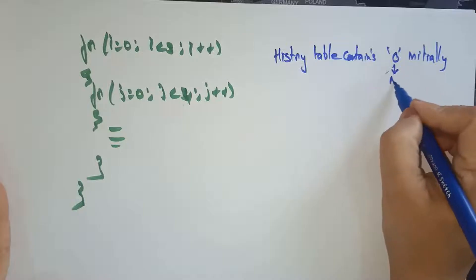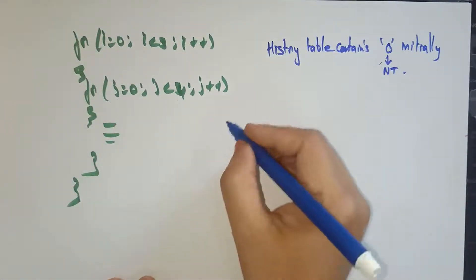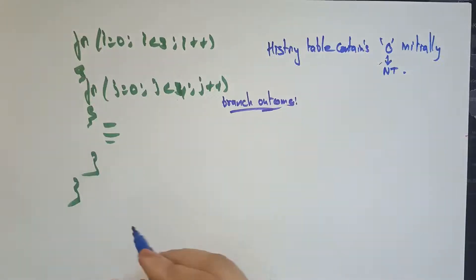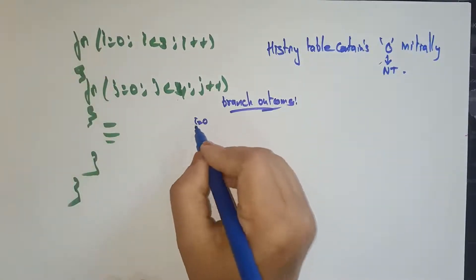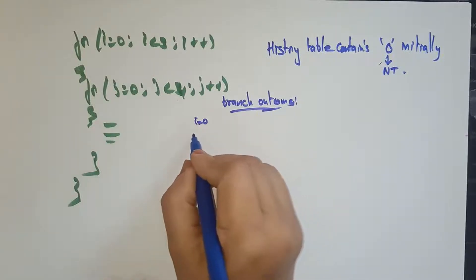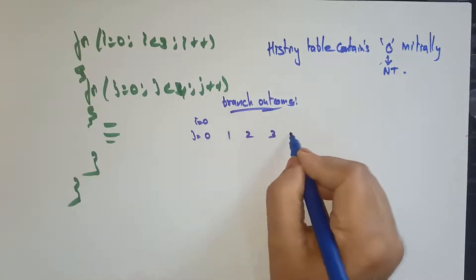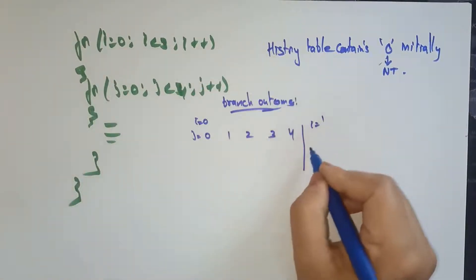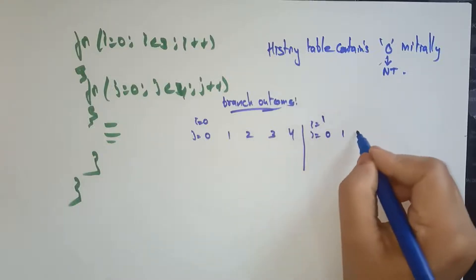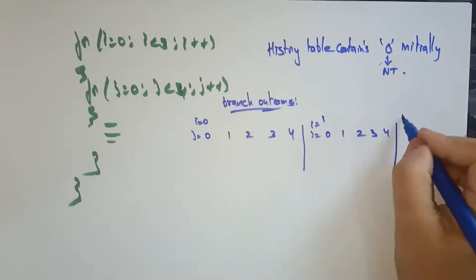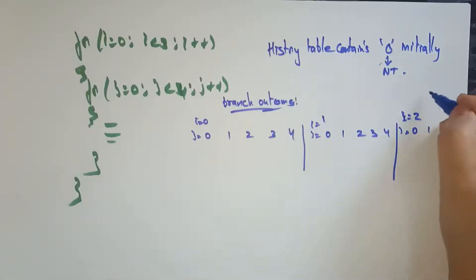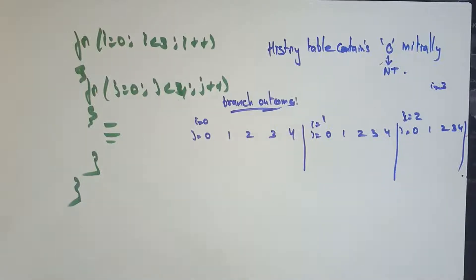0 means not-taken. So what will be the branch outcome? When i = 0, it enters the loop and j goes 0, 1, 2, 3, 4 — when j = 4 the condition is false, so branch is not-taken and we come back from the loop. When i = 1, j again goes 0, 1, 2, 3, 4 — not-taken at j = 4. When i = 2, same pattern. And when i = 3 the outer loop exits — all non-taken.